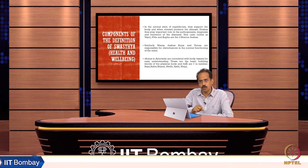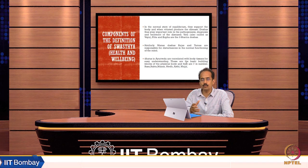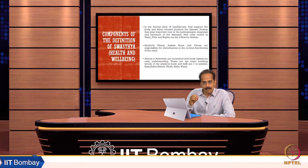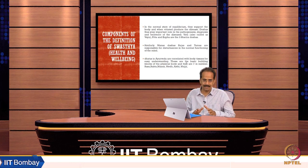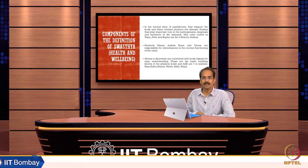Man also moves from sattvic to rajasic or rajasic to tamasic. Rajasic is related to activity and tamas is related to inertness. When rajas and tamas are properly balanced with activity, this state is called sattva. Disturbance in these aspects of gunas results in lack of health or well-being.